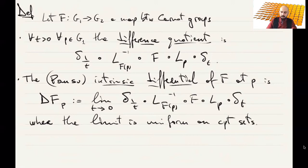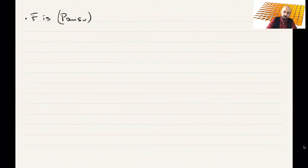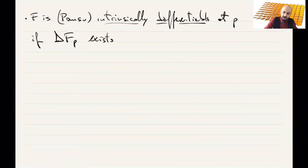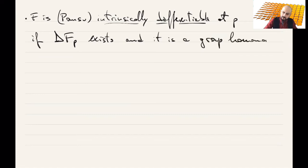This limit might not exist for some maps, but we say that F is Pansu differentiable, or intrinsically differentiable, at P if this intrinsic differential exists and, moreover, it is a group homomorphism. Remember that this map will be a map between Carnot groups.